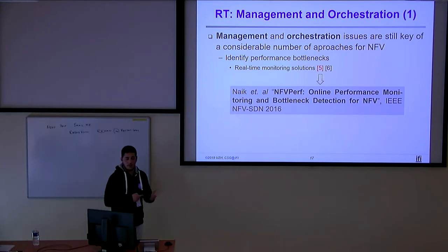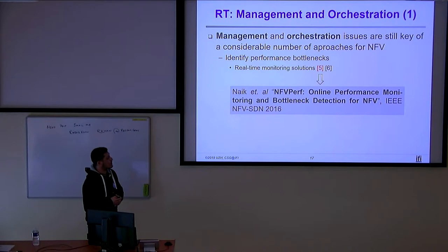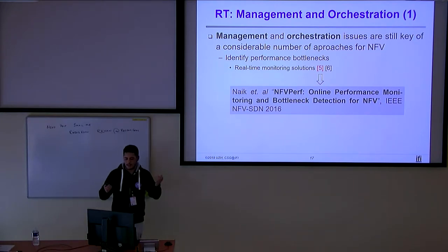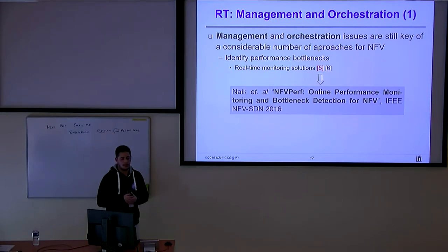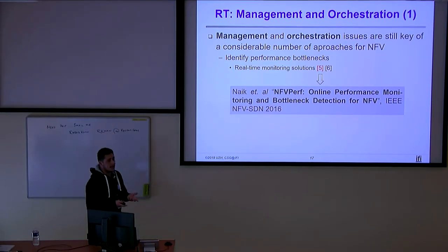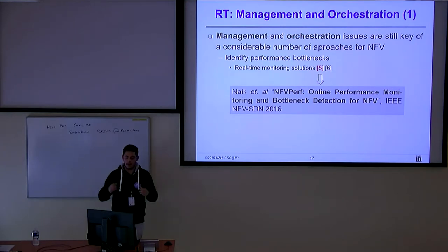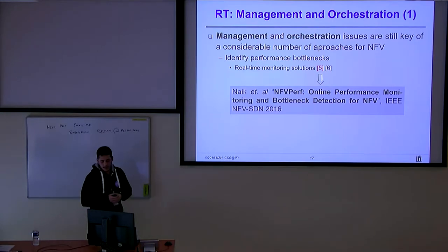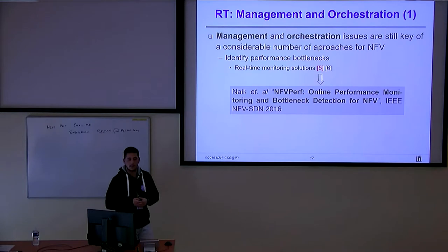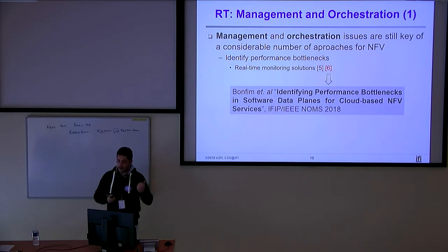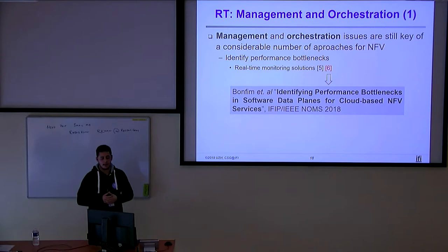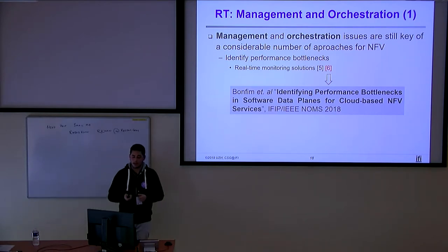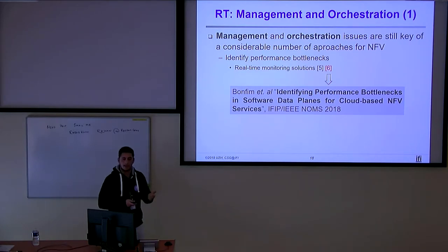For example, NFV Perf was proposed at NFV-SDN in 2016. It is a solution that performs performance monitoring and bottleneck detection in NFV and SFCs. It basically injects packets on the VM-to-VM communication path, computes delays and throughputs, and uses these measurements to identify bottlenecks in real time. Another solution is the PurposeChecker, proposed in a work published at the Network and Service Management conference in 2018. This work monitors the elements of the software data plane and provides performance reports — graphs and visualizations — to highlight bottlenecks in NFV services.